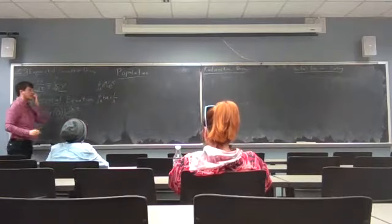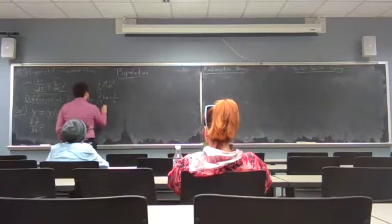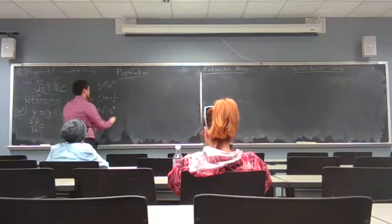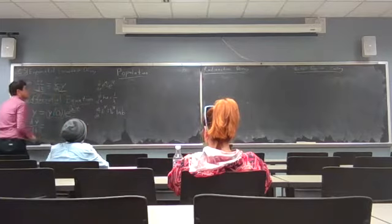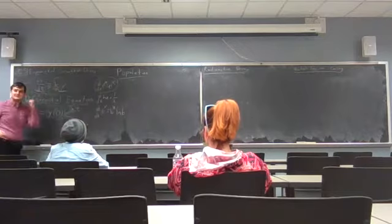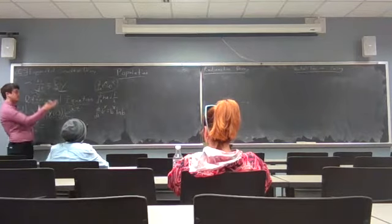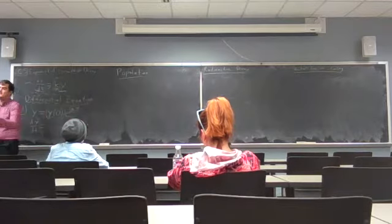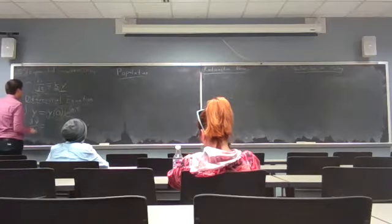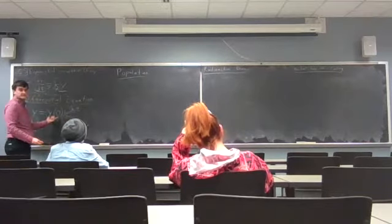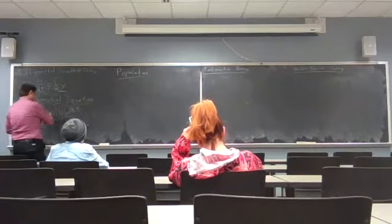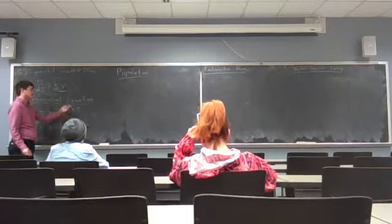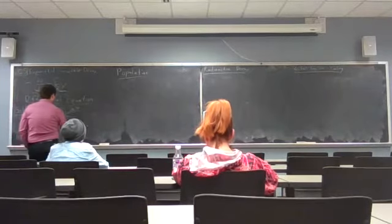If you take the derivative of b to the x, you still write b to the x but you multiply by the natural log of b. But for e to the x, since the natural log of e is 1, the derivative is just e to the x itself. Now, y₀ is a constant so it stays there. For e to the kt — since we're taking the derivative with respect to t and we have kt — we multiply by k, bringing it down. So the derivative of y is just k times y₀ e to the kt.